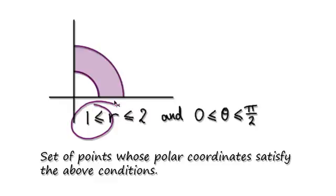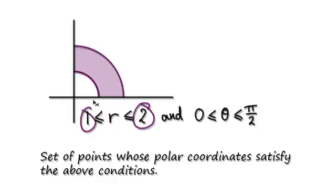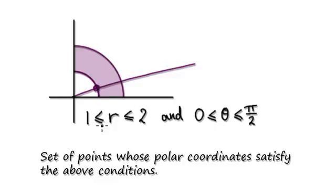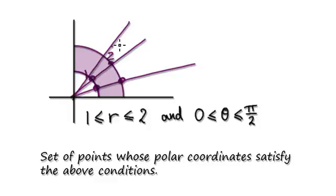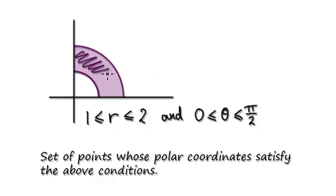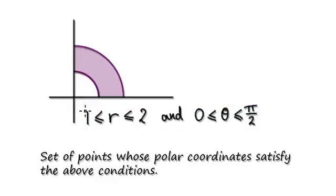When you look at the radius, the radius can be anywhere in between one and two. One is here, so it can be dead on one, and it can be dead on two. So this is one here, this is two here. As it turns out, this region here will satisfy this.